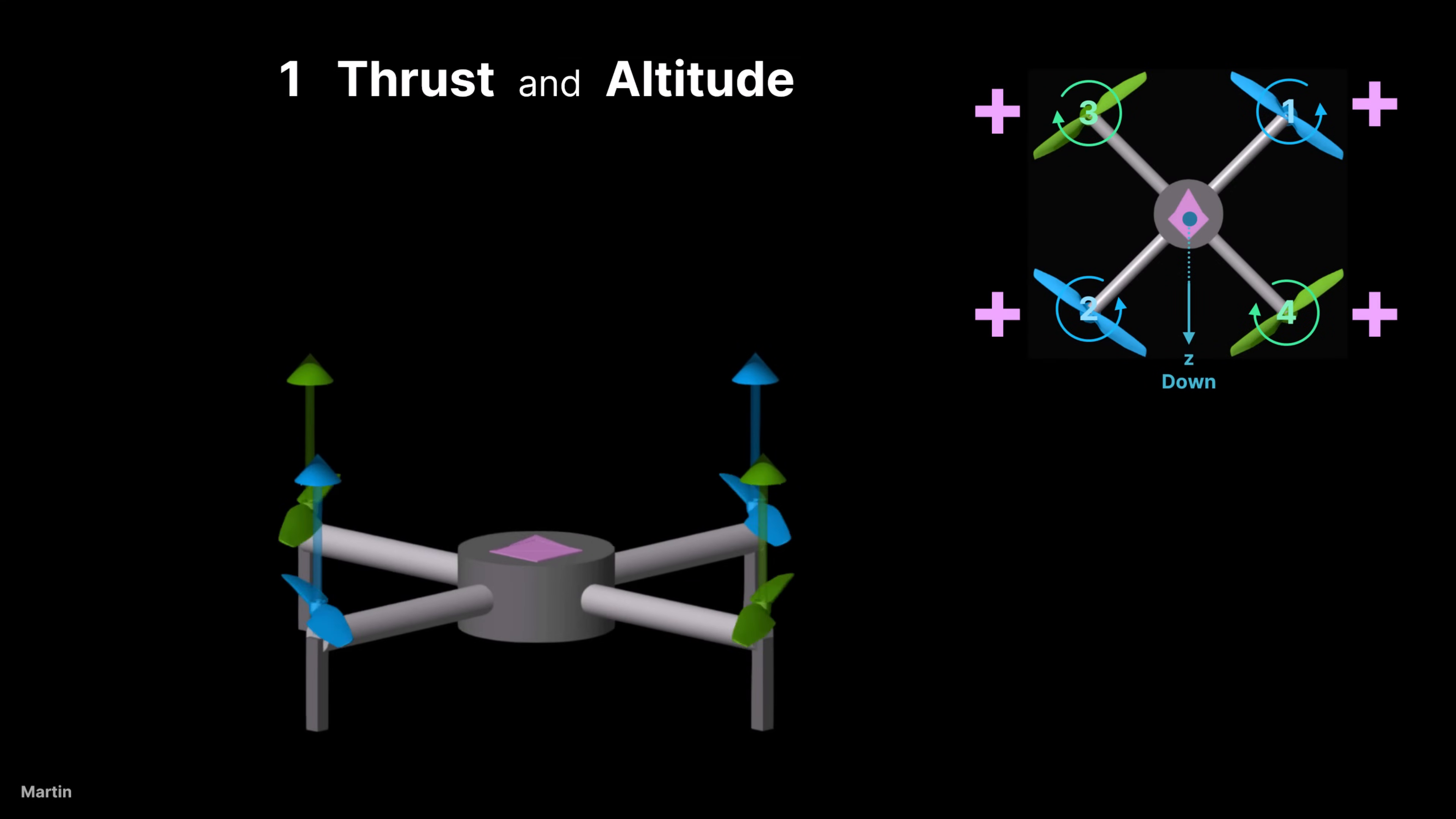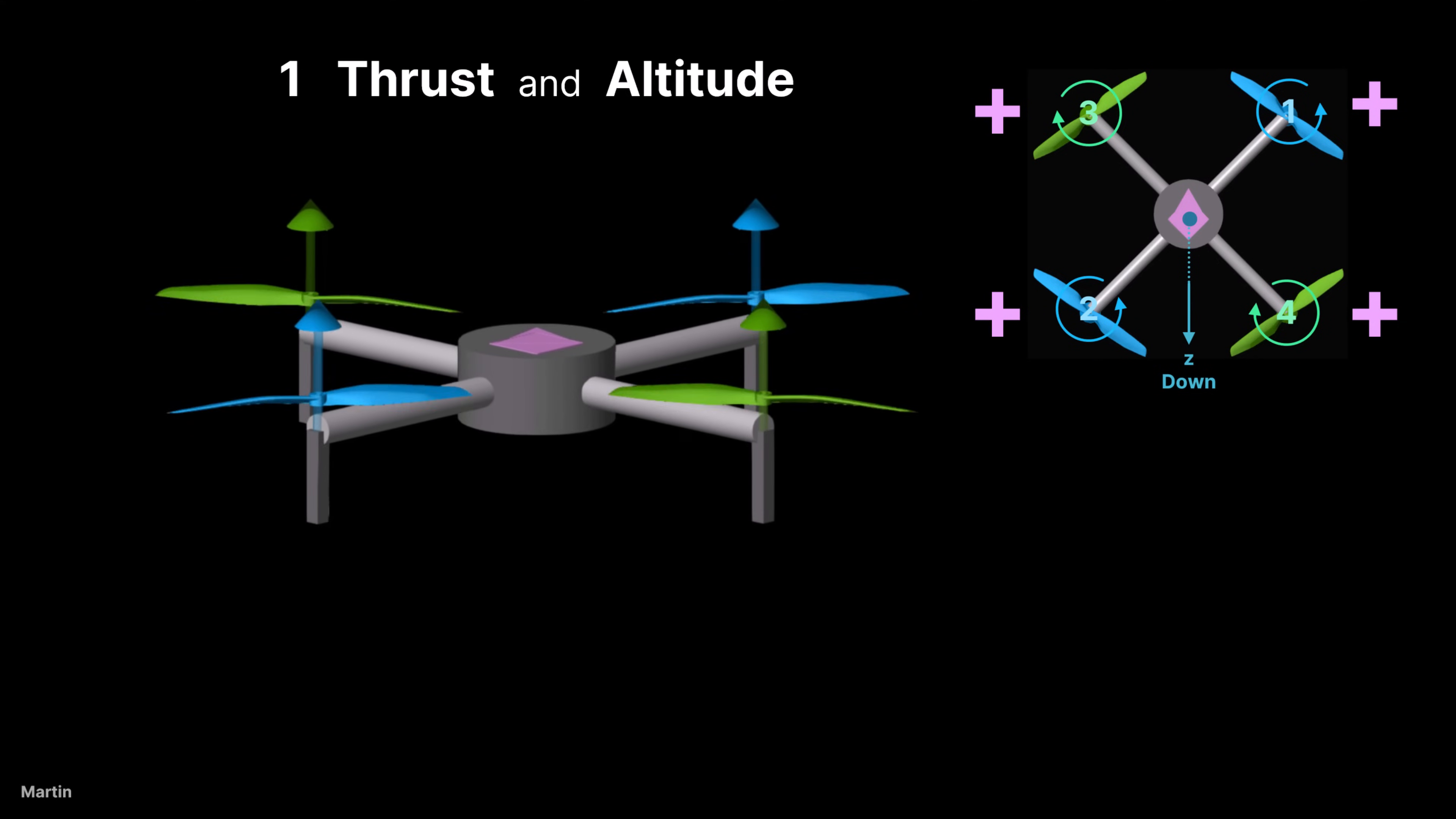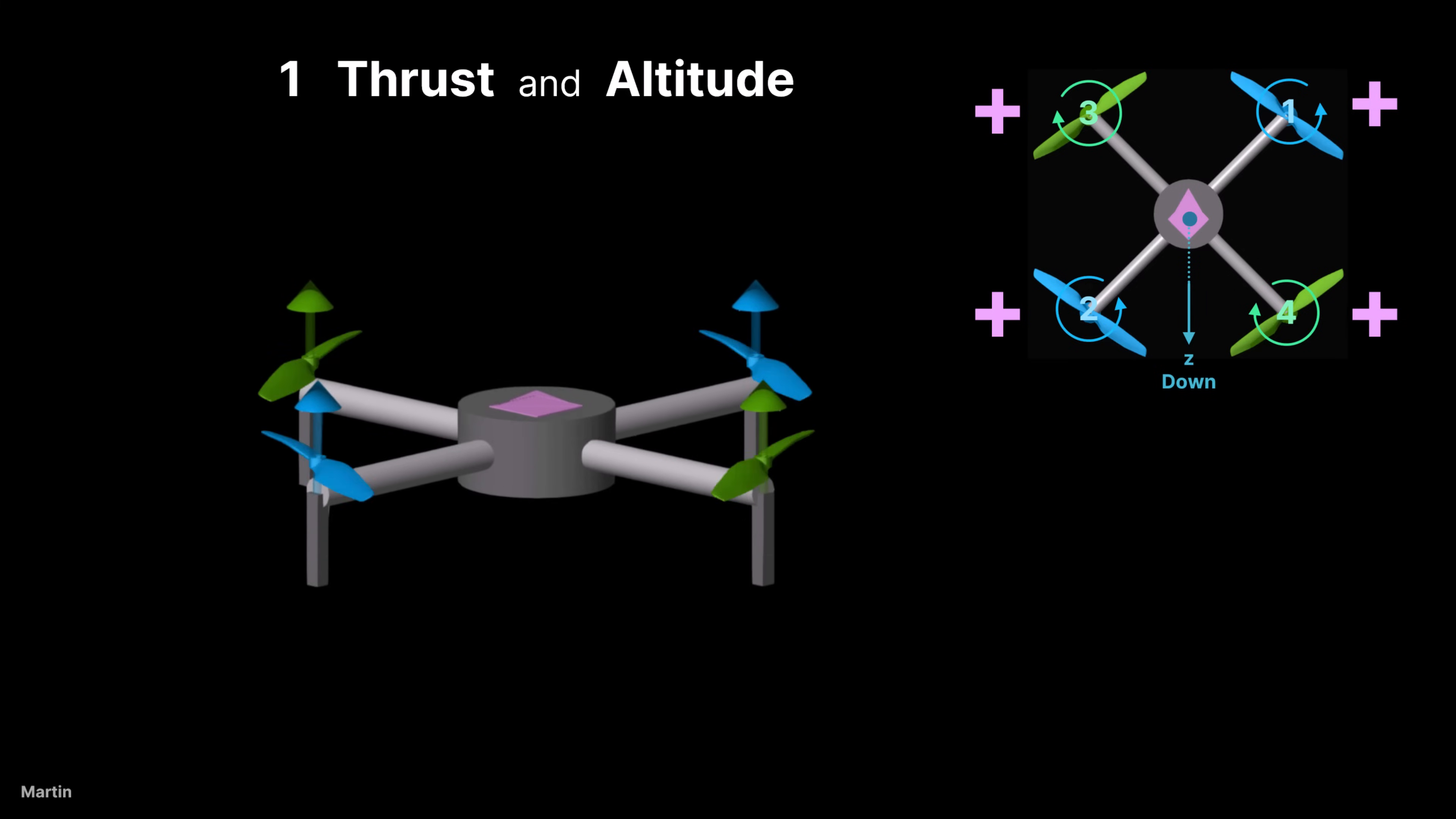A quadcopter controls its motion by varying the speed of its four propellers. These adjustments create changes in thrust, allowing the drone to move in different directions. To control the quadcopter ascend or descend, increase or decrease the speed of all propellers. If the thrust equals gravity, the quadcopter hovers.